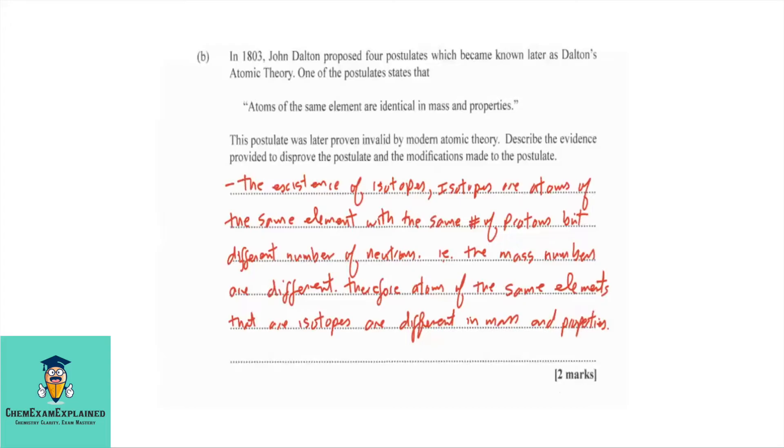Part B. In 1803, John Dalton proposed four postulates, which became known later as John Dalton's atomic theory. One of the postulates states that atoms of the same element are identical in mass and properties. This postulate was later proven invalid by modern atomic theory. Describe the evidence provided to disprove the postulate and the modifications made to the postulate.